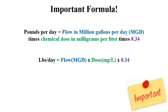An important formula for calculating feed rate is: pounds per day equals flow in million gallons per day (MGD), times the dose in milligrams per liter, times the constant 8.34.